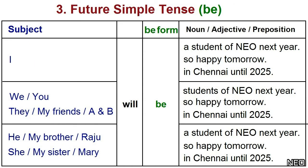In future simple tense, we use be. Examples: I will be a student next year. We will be students next year. He will be a student next year.